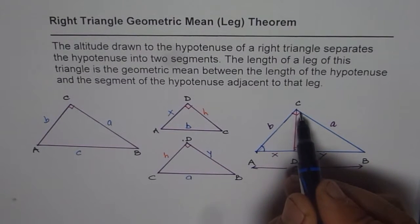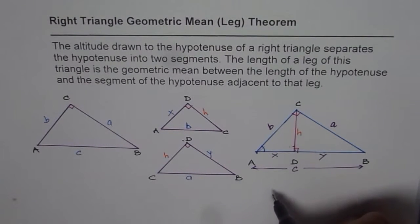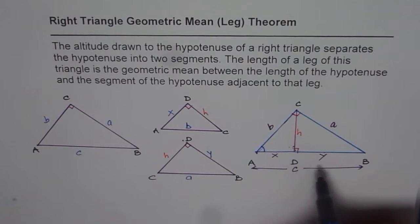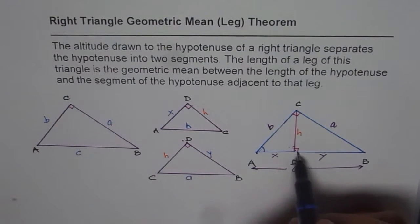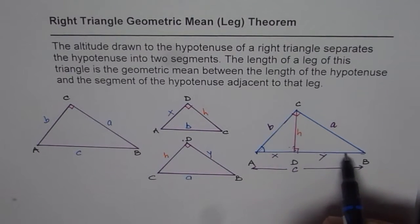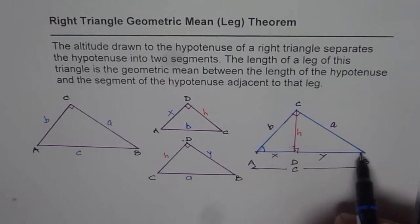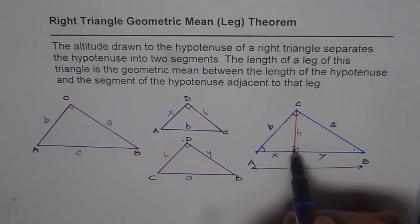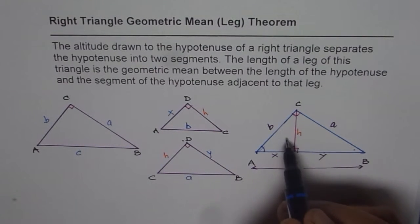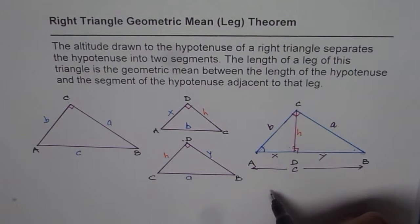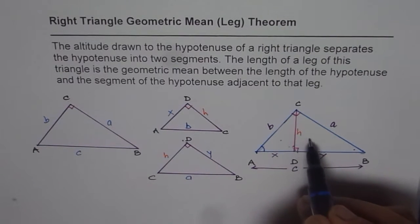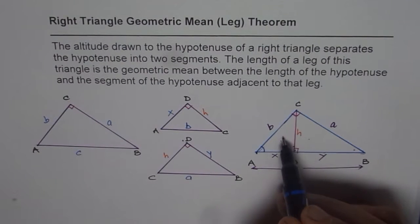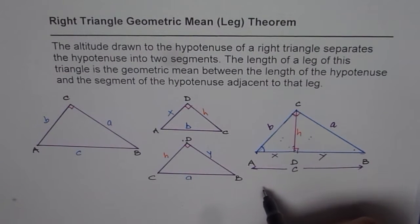That is the 90 degrees for the big triangle and this is the 90 degrees for the small triangle. Similarly, if you consider the other small triangle with the big triangle, we have a common angle B, and we have 90 degrees — therefore these two triangles are also similar. Since these triangles are individually similar to the big triangle, they themselves are also similar to each other.